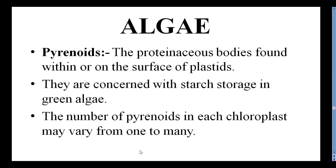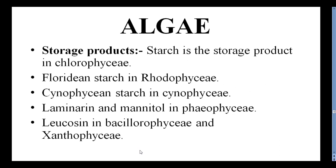Pyrenoids are proteinaceous bodies found within or on the surface of plastids. They are concerned with starch storage in green algae. The number of pyrenoids per chloroplast may vary from one to many. Regarding storage products: starch is stored in Chlorophyceae, whereas Floridean starch is in Rhodophyceae. Cyanophyceae stores cyanophycean starch; laminarin and mannitol are the reserve food materials in Phaeophyceae; and leucosin is the reserve food material in Bacillariophyceae and Xanthophyceae.